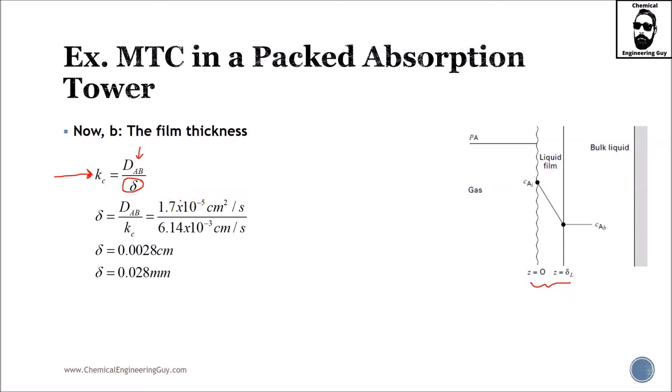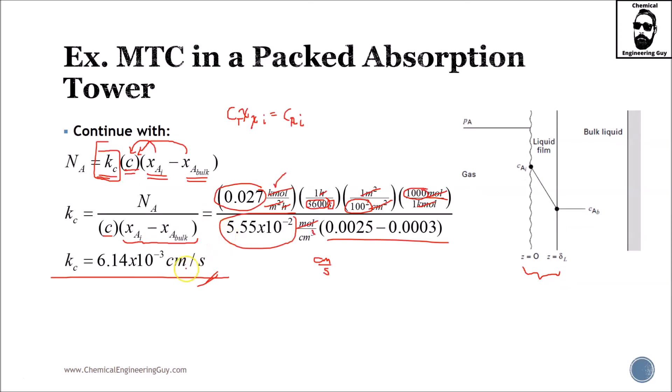The mass transfer coefficient equals the diffusivity divided by the film thickness. If you don't remember where we got this, go back to film theory. And then I substitute here. Remember this was to the minus fifth. And this is Kc value, which we just got right here.